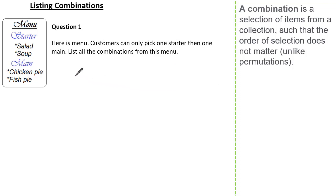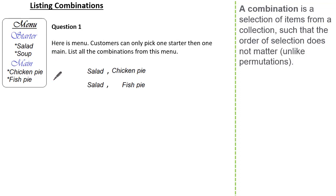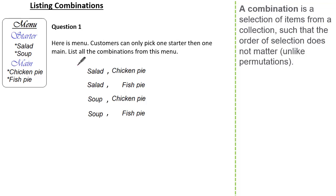Let's start with a salad as our starter. This could be followed by chicken pie, or we could have salad followed by fish pie. Or we could start with soup followed by chicken pie, or soup followed by fish pie. Here you can see we have four different combinations of having one starter and then one main.